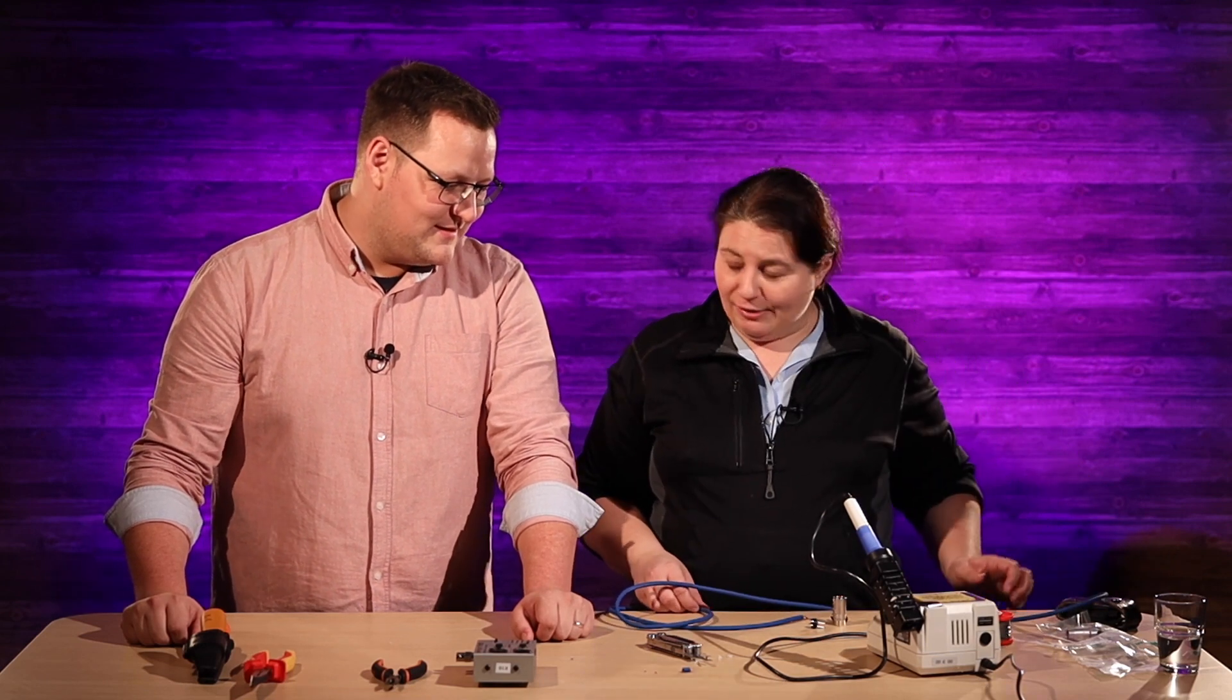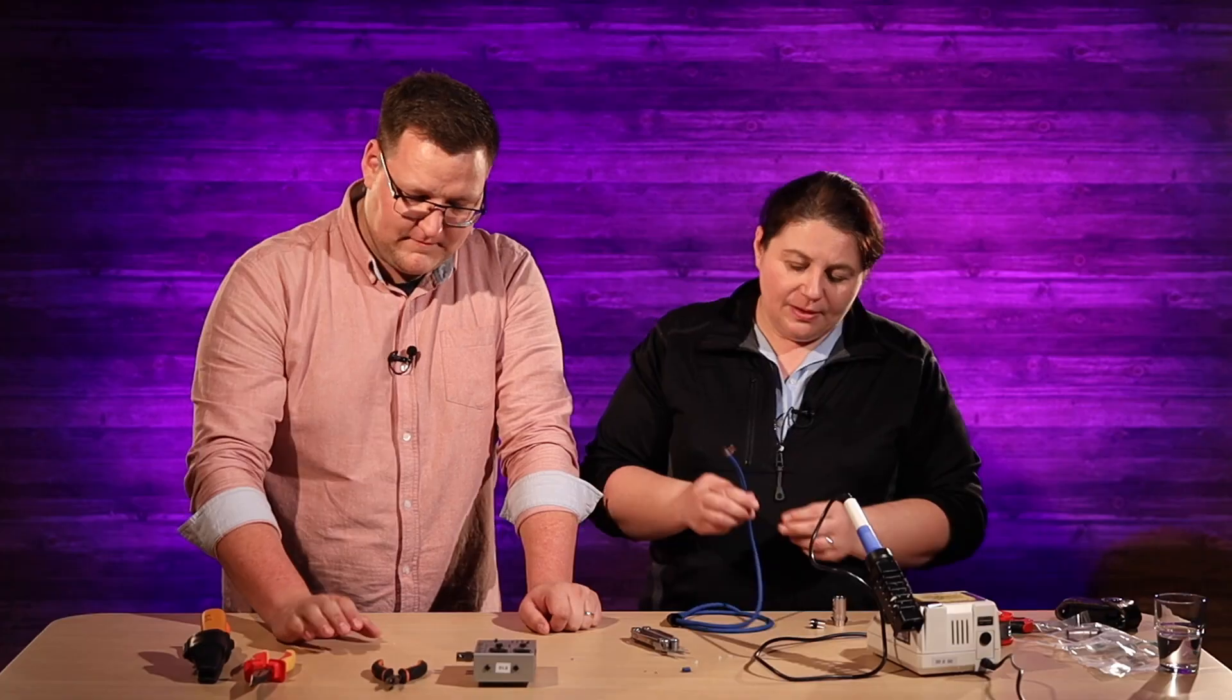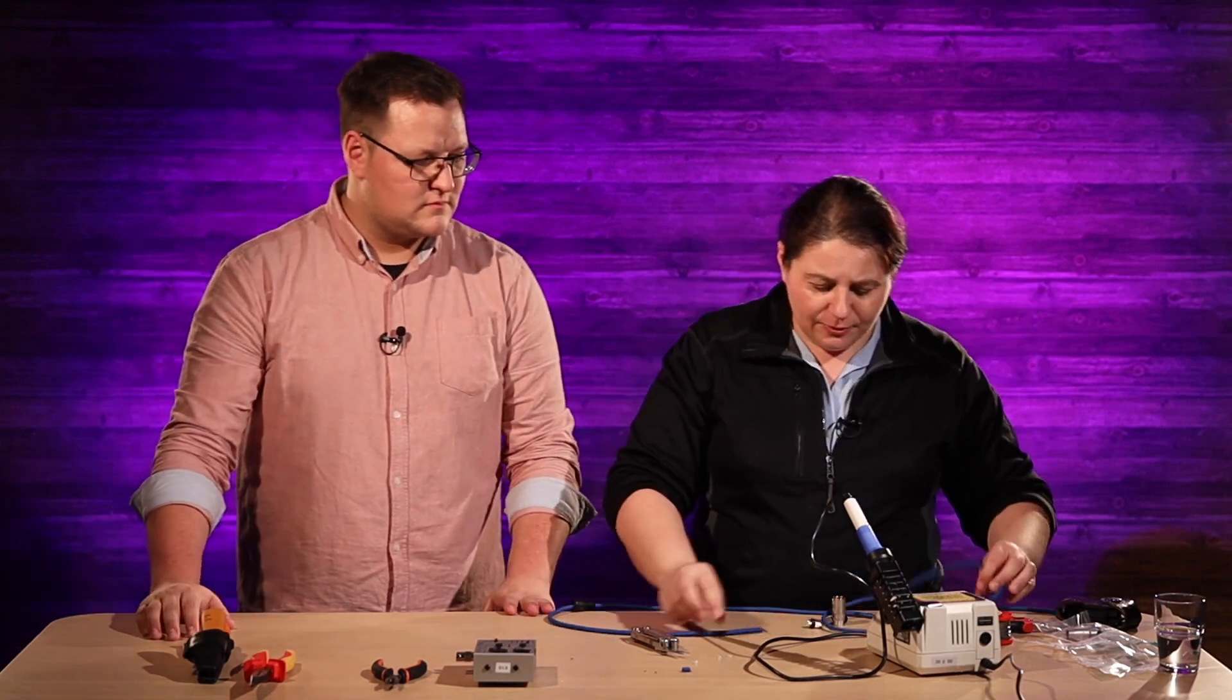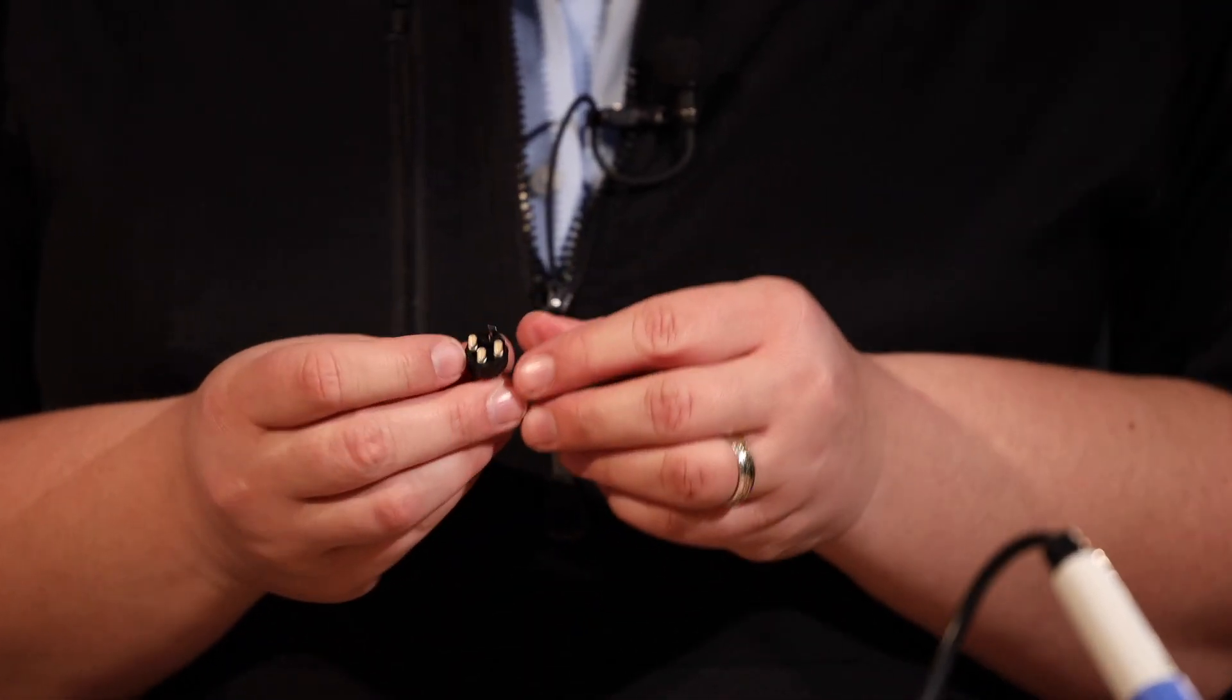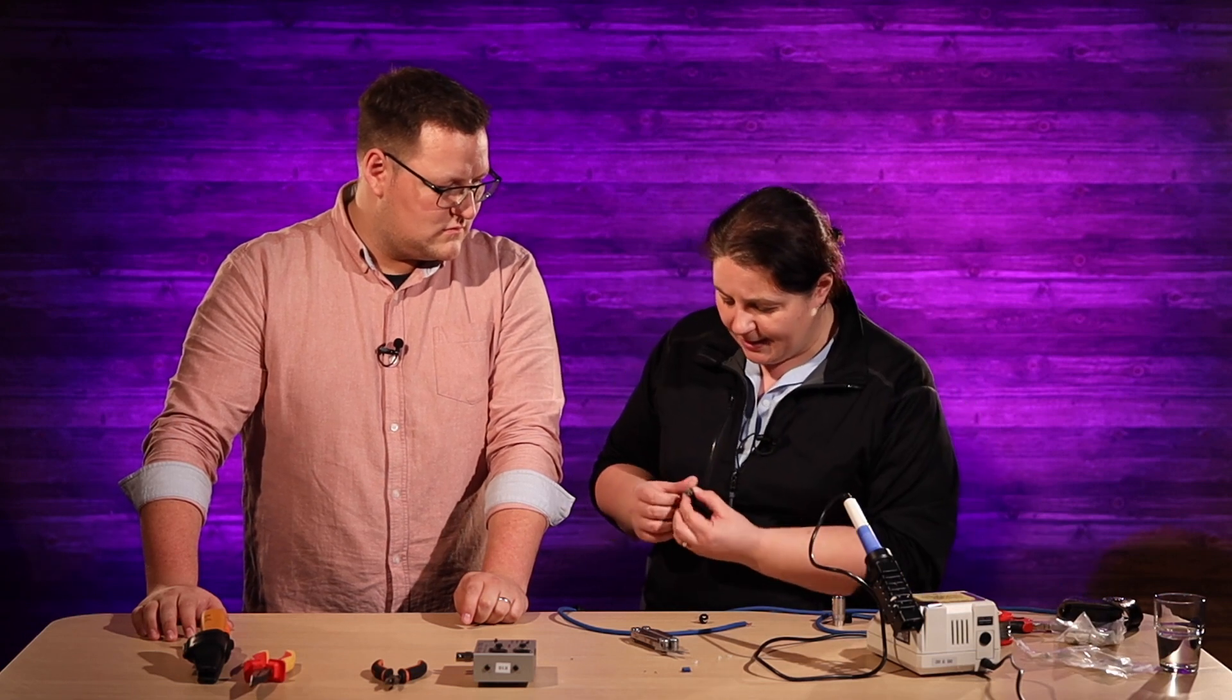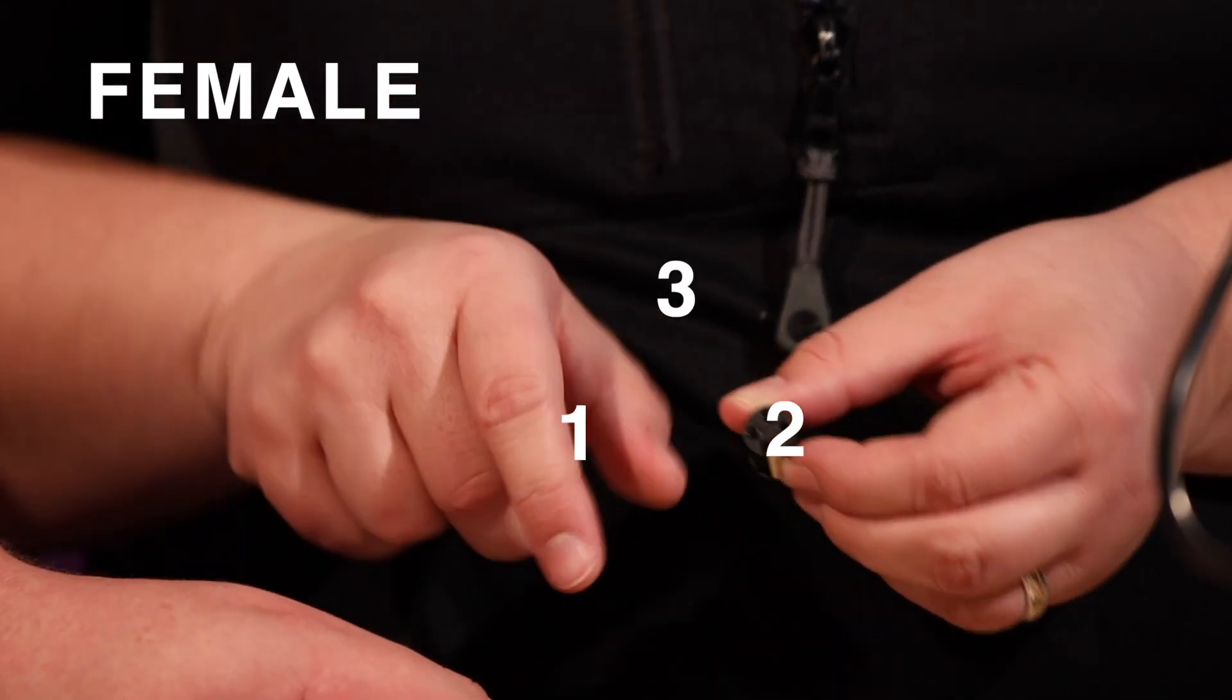Now before I do anything else I want to look. The male mount and the female mount are inverted. So the pins are kind of backwards on the female to the male. You have to think backwards. Here that's pin one. That's pin two. And that's pin three.